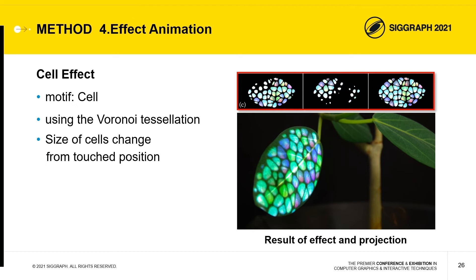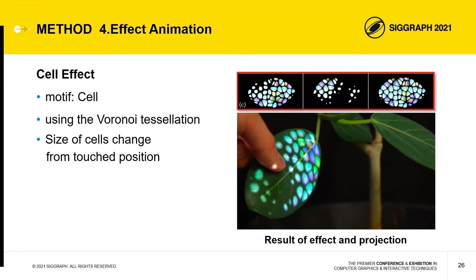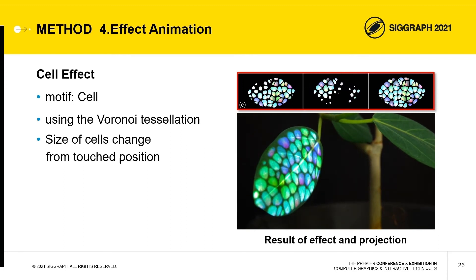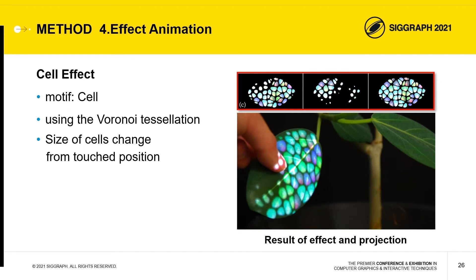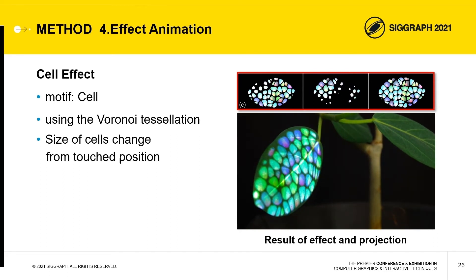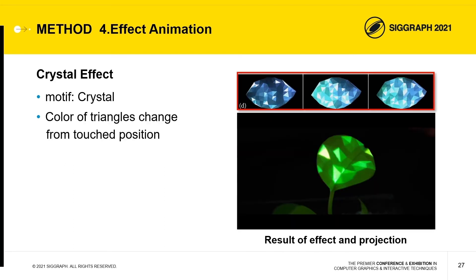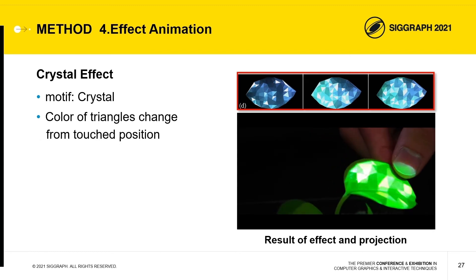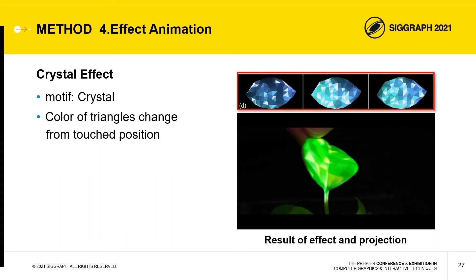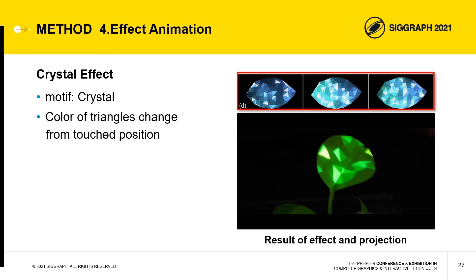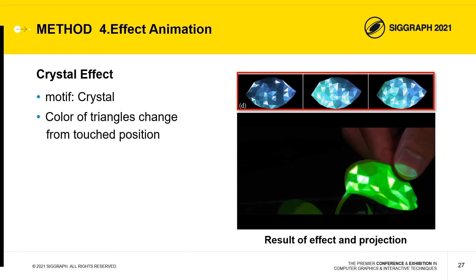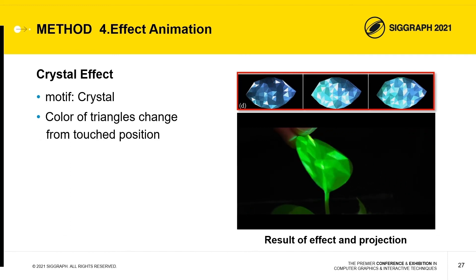In the cell effect, the size of each area is calculated using Voronoi tessellation. Additionally, the rounded cell area size shrinks from the touched position, like the propagation of a cell reaction. Finally, the crystal effect, whose motif is a crystal that shines by reflection and refraction, consists of shining triangles. The color of each triangular area changes smoothly from the touched position.